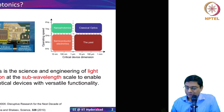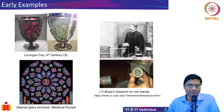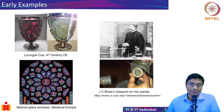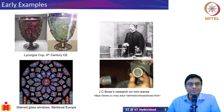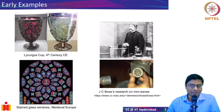Nanophotonics as a field is relatively new — people have been talking about it in the last 20 years. But if you look at historical examples, even in the Roman era there were devices made that exploited the principles of nanophotonics, even though at that time they didn't understand what they were doing. One example is what is known as the Lycurgus Cup, an artifact made in the Roman era around the fourth century.